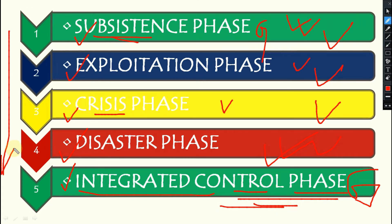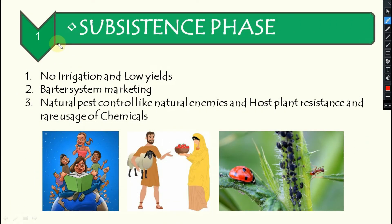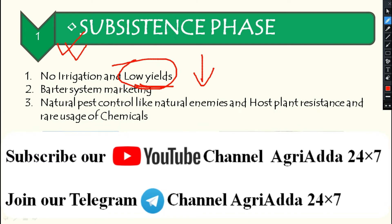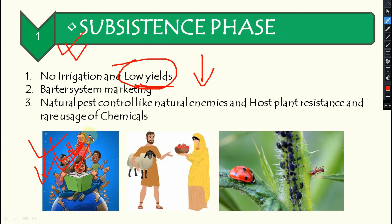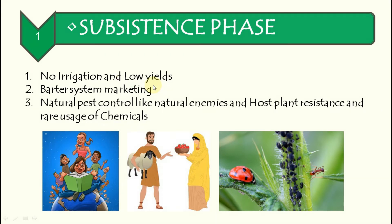The first phase is the subsistence phase — the traditional one. At that time, population was very less, so demand for food was low. Farmers were not pressured to achieve higher yields, so they did not use any input costs like irrigation, fertilizers, or chemicals. Low yield was sufficient because demand was also very low, and produce still held good value.